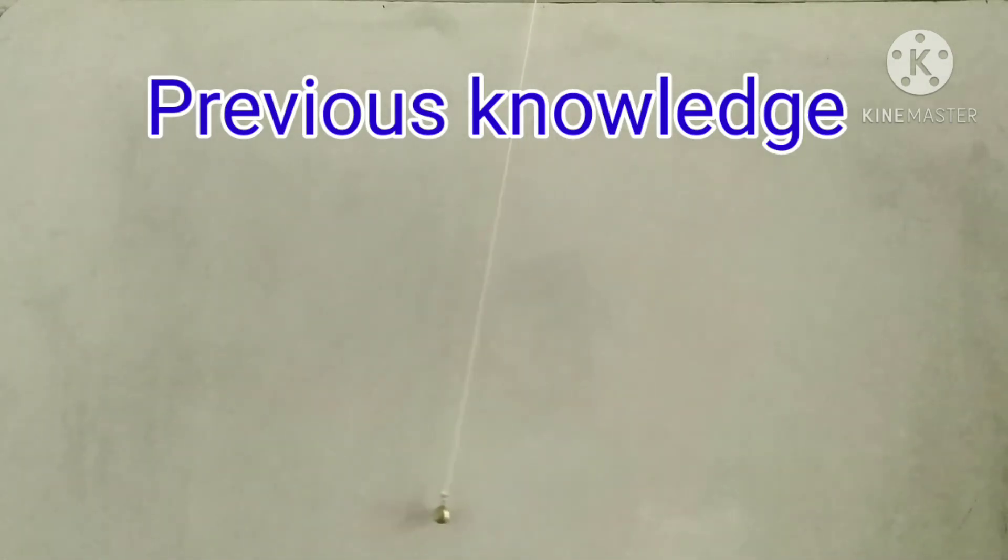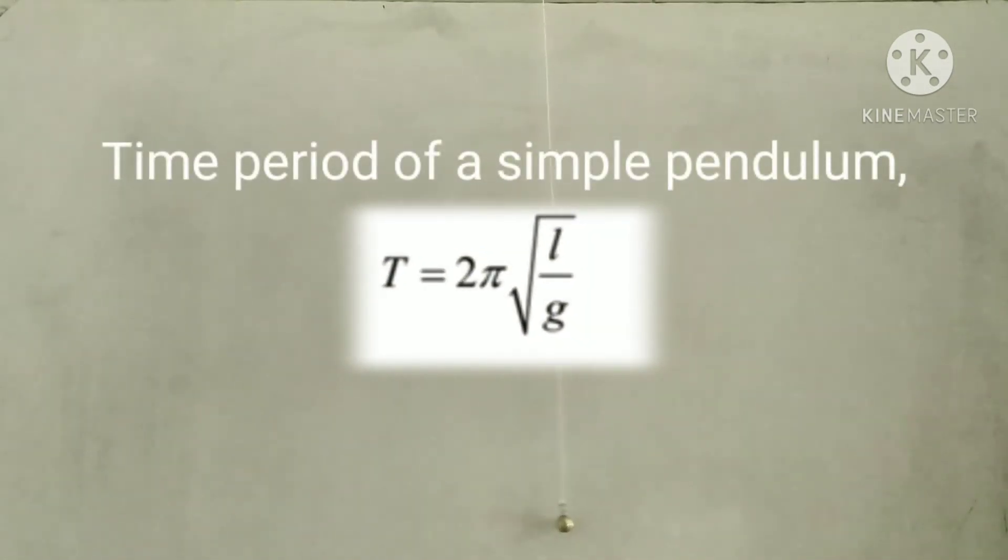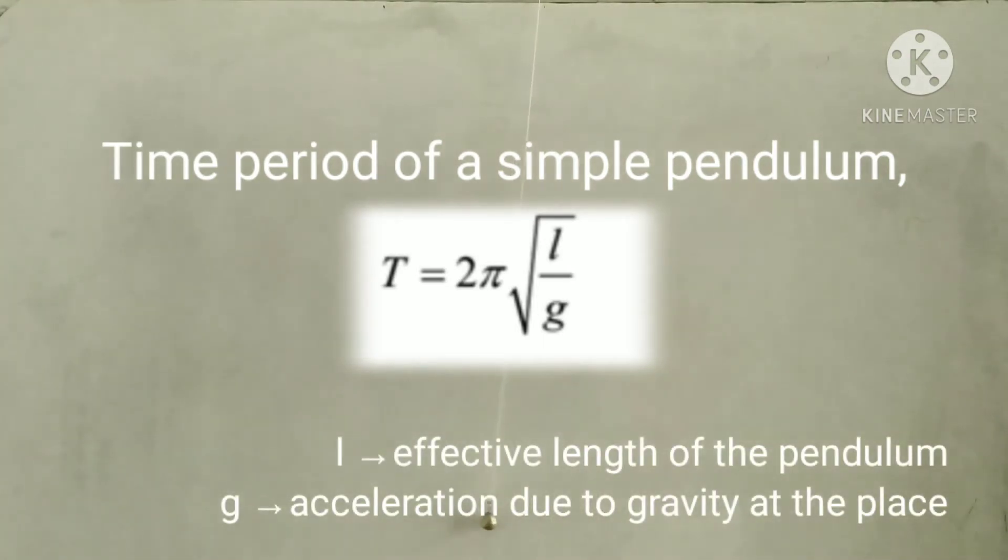Hi friends, you know that the time period of an oscillating simple pendulum is given by the formula T is equal to 2π square root of l by g, where l is the effective length of the pendulum and g is the acceleration due to gravity at the place.